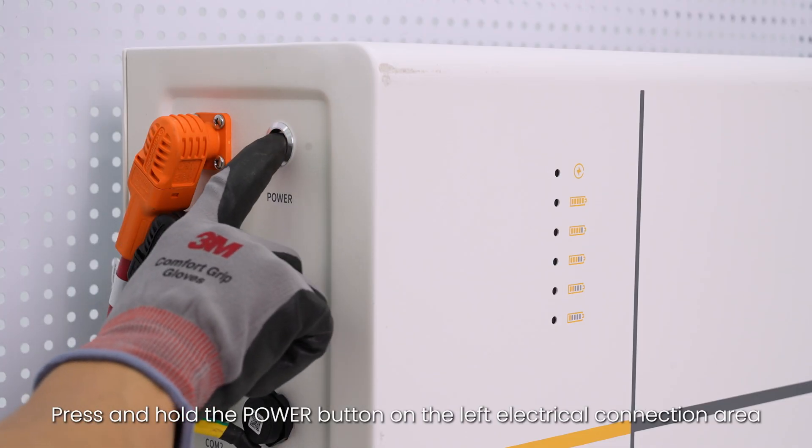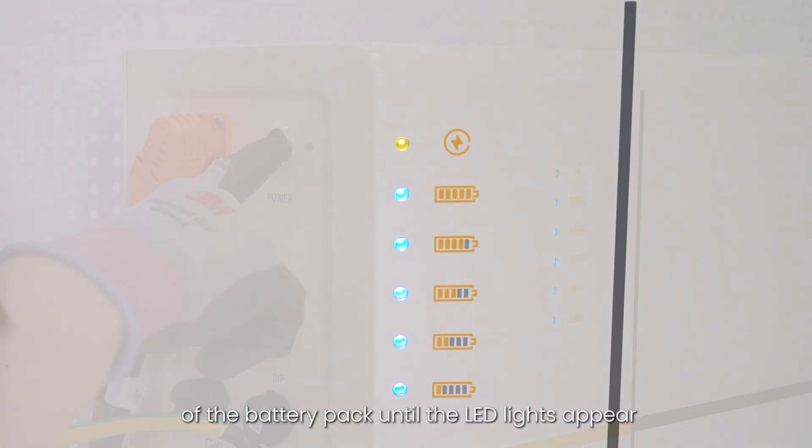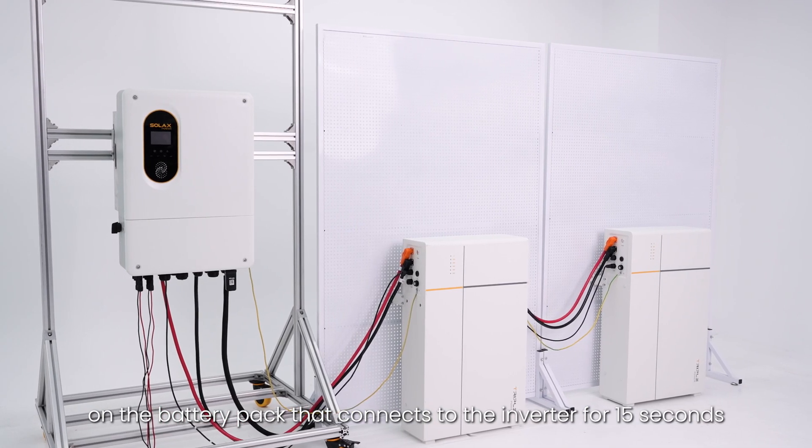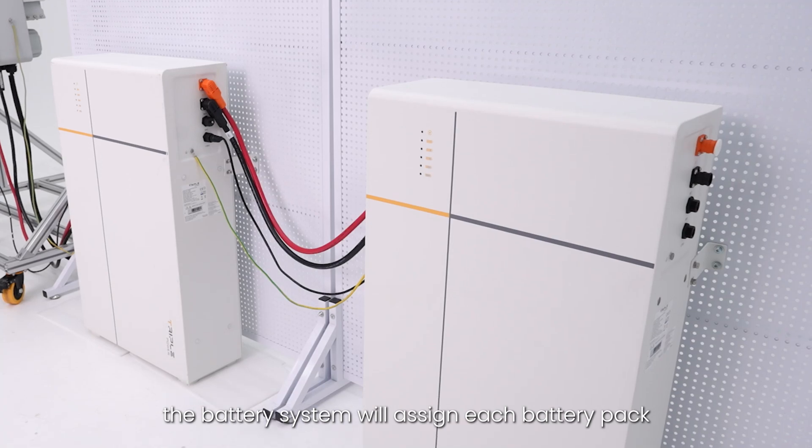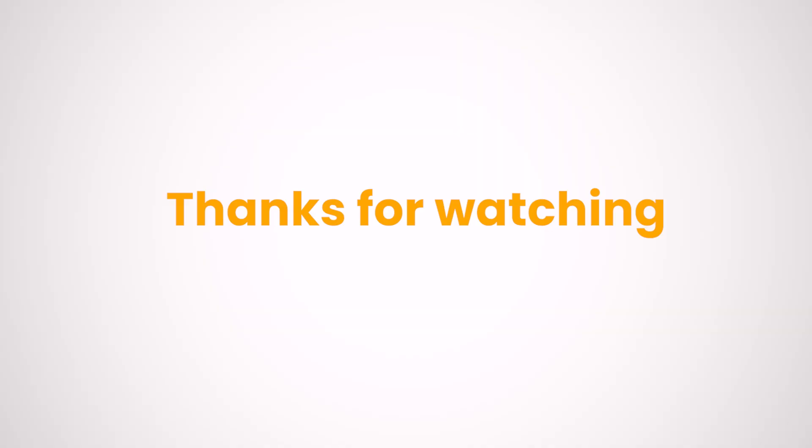Press and hold the power button on the left electrical connection area of the battery pack until the LED lights appear. Regarding the first start, after pressing and holding the power button on the battery pack that connects to the inverter for 15 seconds, the battery system will assign each battery pack in a communication loop a unique address. Thanks for watching.